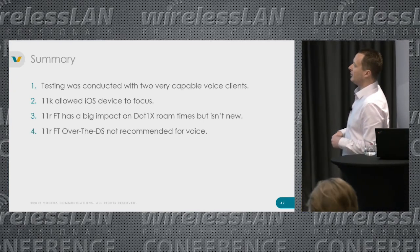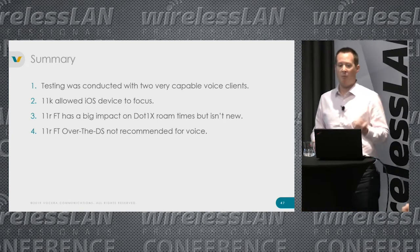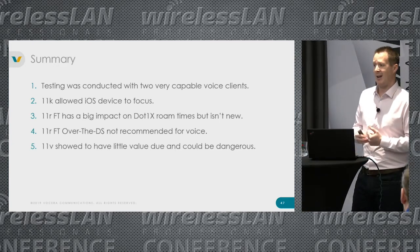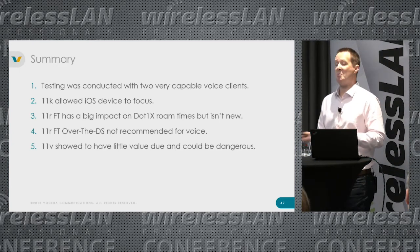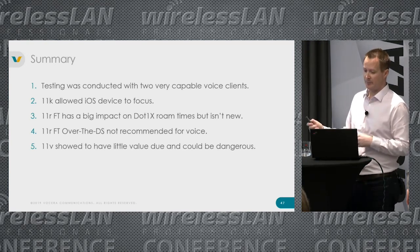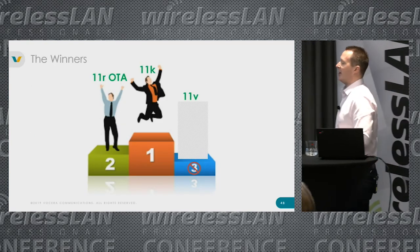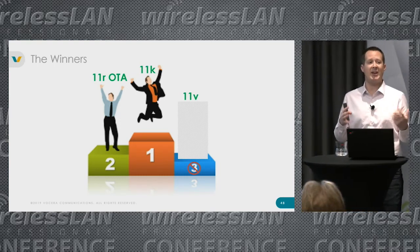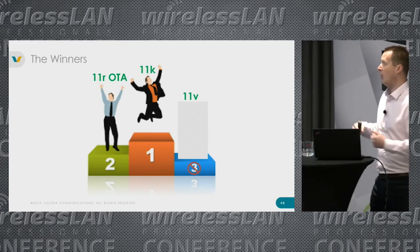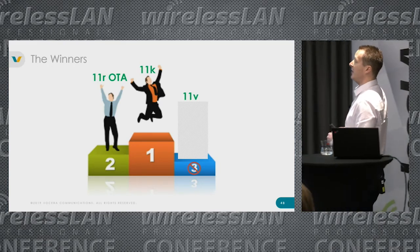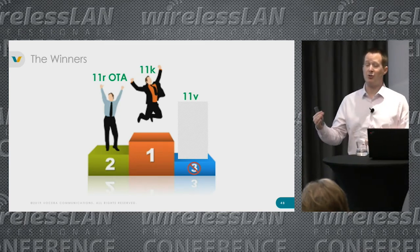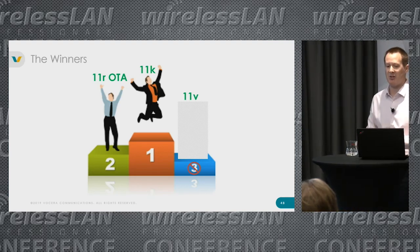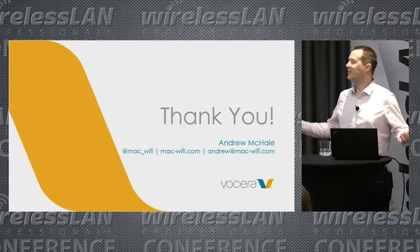I don't recommend 11r over-the-DS for voice. 11v showed very little value and was actually dangerous in my lab environment, though your mileage may vary in a real enterprise deployment. On the winner's podium: 11k helps the iPhone constantly whether on PSK or dot1x — it had the biggest overall impact. When using dot1x, 11r over-the-air was a close second — two milliseconds to authenticate is amazing. And 11v? I had to hash it out — it doesn't deserve a spot on the podium. Thank you very much.